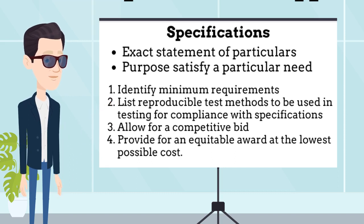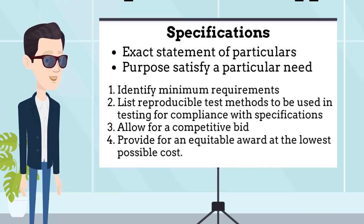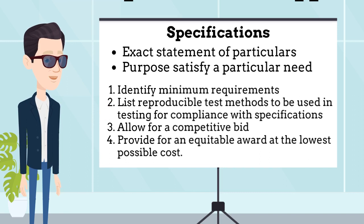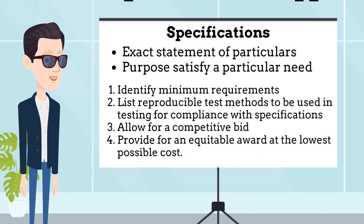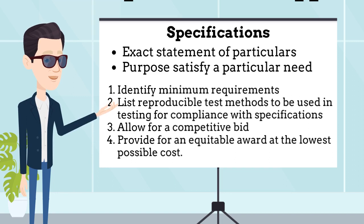By definition, a specification sets limits and eliminates, or potentially eliminates, items that are outside the boundaries drawn. A good specification should do four things: identify minimum requirements; list reproducible test methods to be used in testing for compliance with specifications; allow for a competitive bid; and provide for an equitable award at the lowest possible cost.